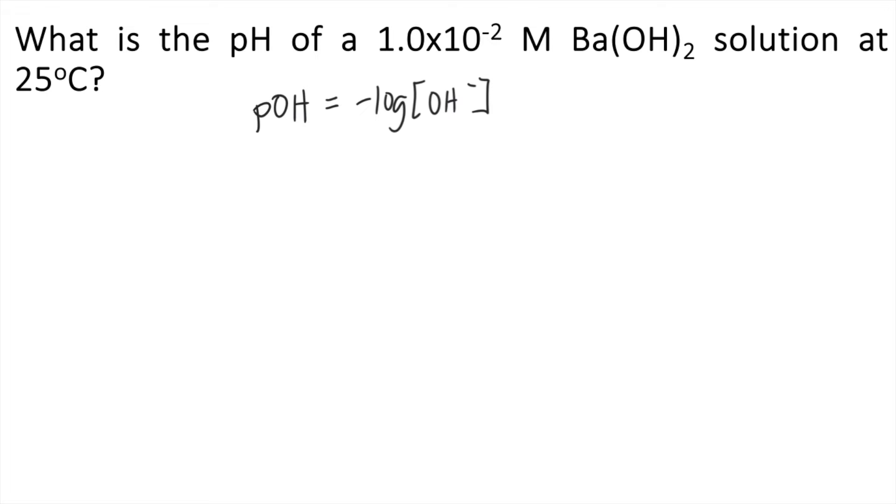In the problem, we are given the concentration of barium hydroxide or Ba(OH)₂. As you can see in the chemical formula, for every 1 mole of barium hydroxide, there are 2 moles of hydroxide.